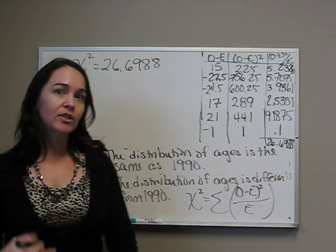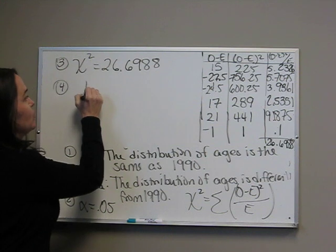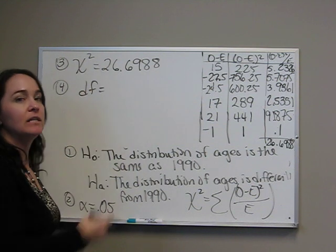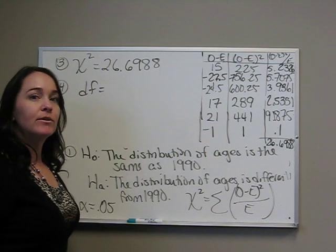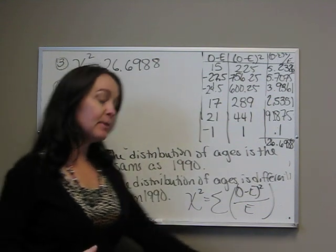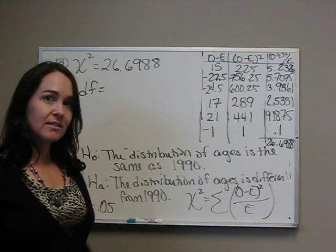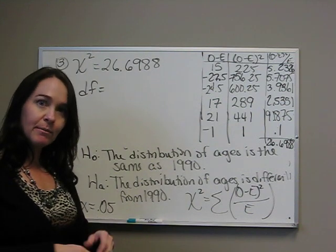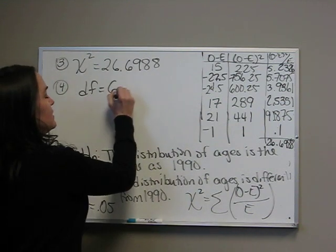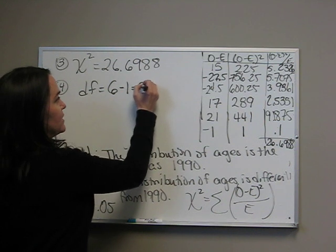Let's look at the critical value approach. Just like the T table, we need degrees of freedom. The degrees of freedom of a goodness of fit test is how many variables do we have minus one. Remember that there were six age groups. So that's how many variables we have. Six age groups minus one is five.